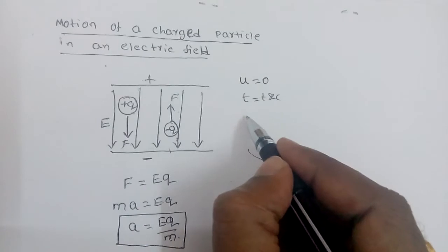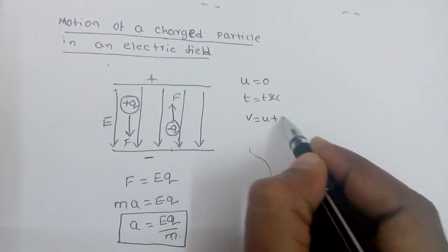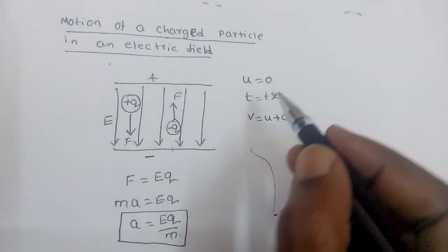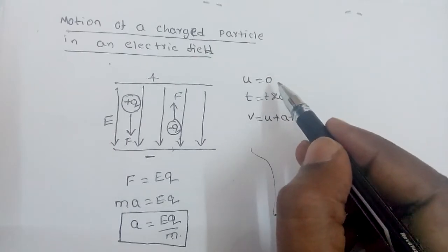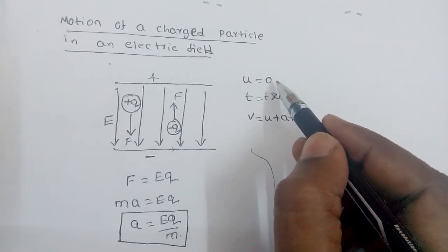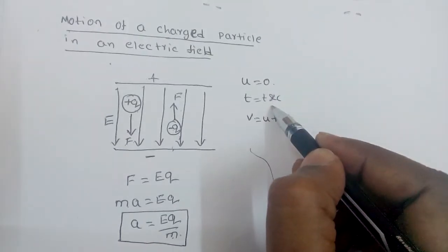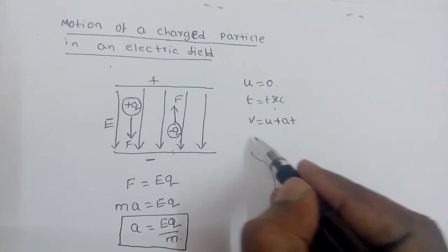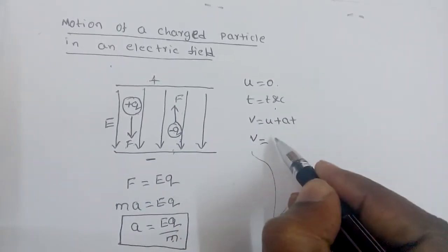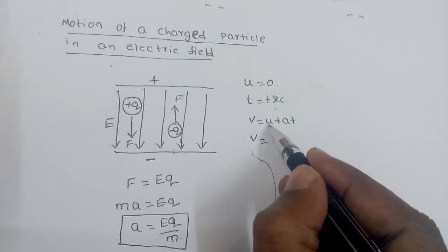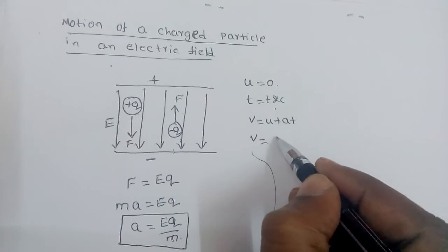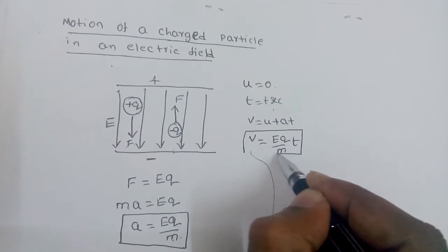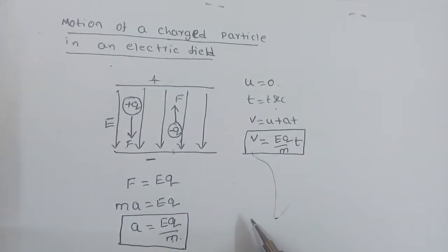With the help of the first equation of motion, V = U + at, we can find the velocity of this charged particle. Substituting the quantities — initial velocity U = 0, time = t seconds, and acceleration = Eq/m — the final velocity at t seconds is V = (Eq/m) × t.